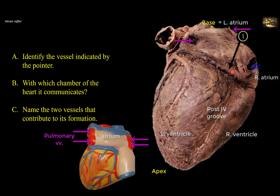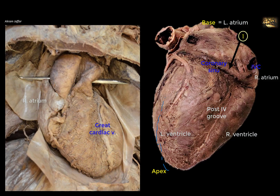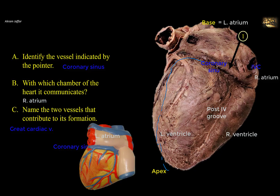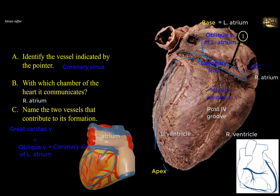The vessel is wide and short, lying in the posterior part of the atrioventricular groove. Following it, it opens into the right atrium just to the left of the opening of the inferior vena cava — it is the coronary sinus, the main vein of the heart. It is formed by the great cardiac vein, which ascends the anterior interventricular groove and turns around the left border of the heart accompanying the circumflex branch of the left coronary artery. The great cardiac vein unites with the oblique vein of the left atrium — marking the beginning of the coronary sinus. The coronary sinus then receives the middle cardiac vein and the small cardiac veins.